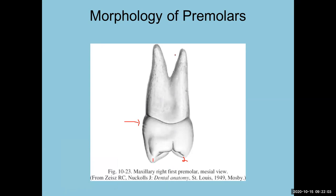We've got two cusps, and look at this — this is a bifurcation. There's a bifurcation. Which premolar has a bifurcation? The first premolar — that is the maxillary first premolar. It's rare that any other premolar will have a bifurcation. Sometimes you'll see a bifurcation in a mandibular canine, but this is characteristic of a maxillary first premolar.